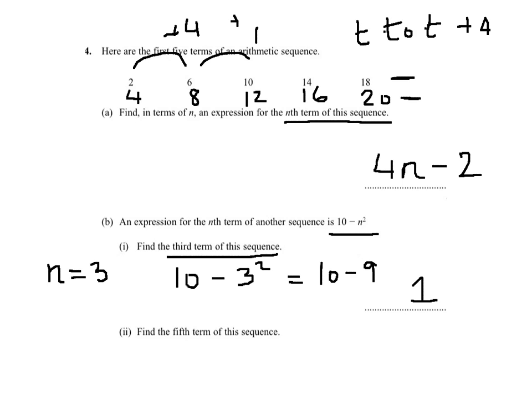So, the fifth term will be for the numerical value of n equals 5 and we will have 10 take away 5 squared, so this is 10 take away 25. So, the fifth term is minus 15.